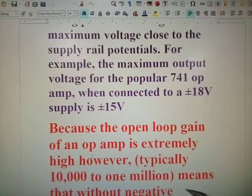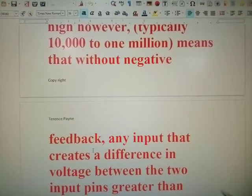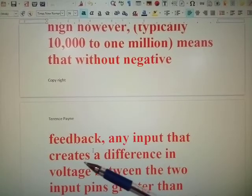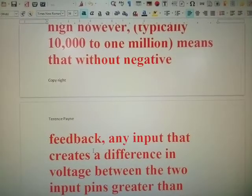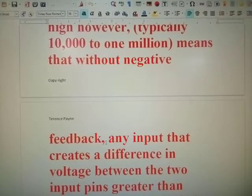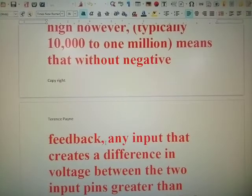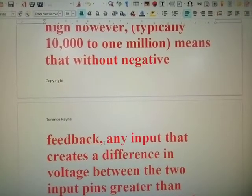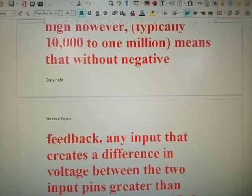This means that without negative feedback, any input that creates a difference in the voltage between the two input pins greater than plus or minus 150 microvolts - now that's microvolts, 150 times 10 to the minus 6 - may be amplified. So let's look at what you're saying here. Because the op-amp has such a high gain, you only need to put in a very small voltage in the microvolts that allows us to amplify this microvolt voltage into a very large voltage.